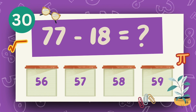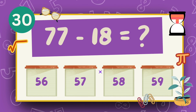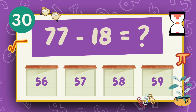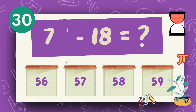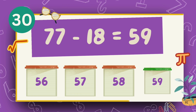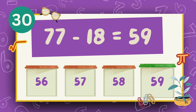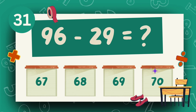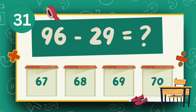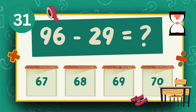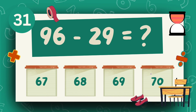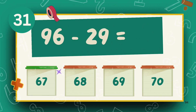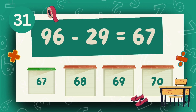What is 77 minus 18? The answer is 59. What is 96 minus 29? The answer is 67.